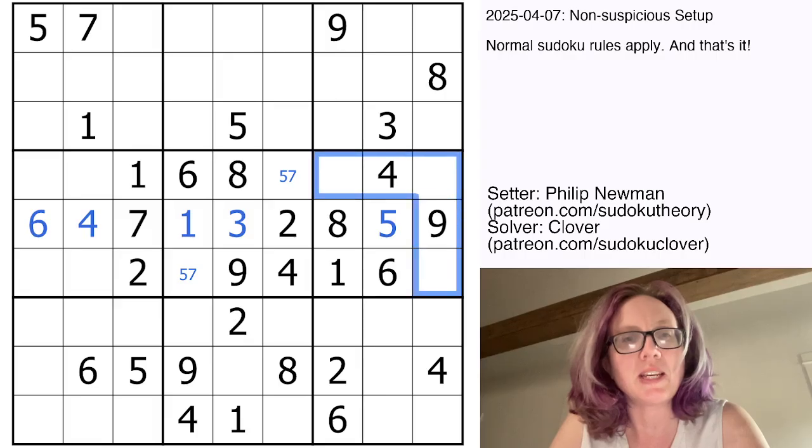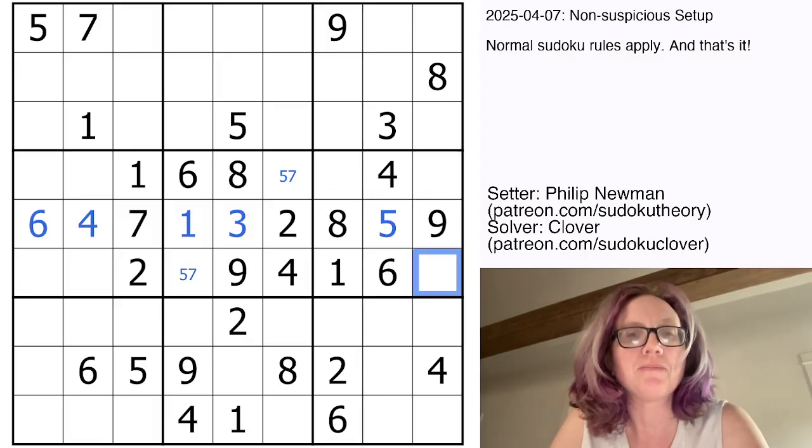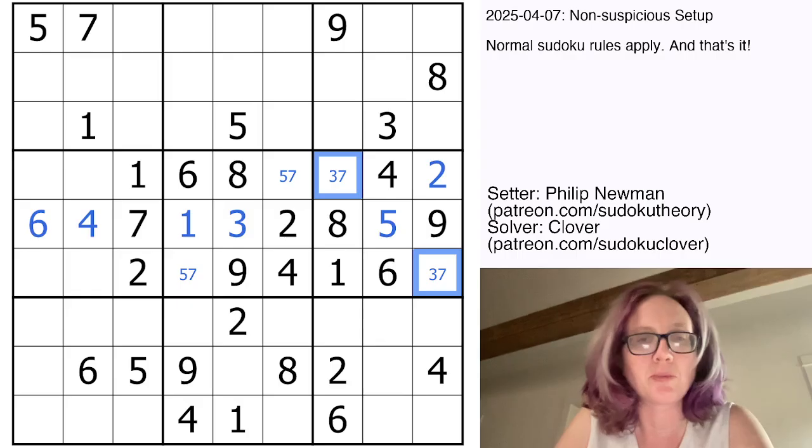So now to fill in this region, I need 2, 3, and 7. 2 can't go here or here. Therefore, 2 goes there. And I can mark these guys as 3 and 7.